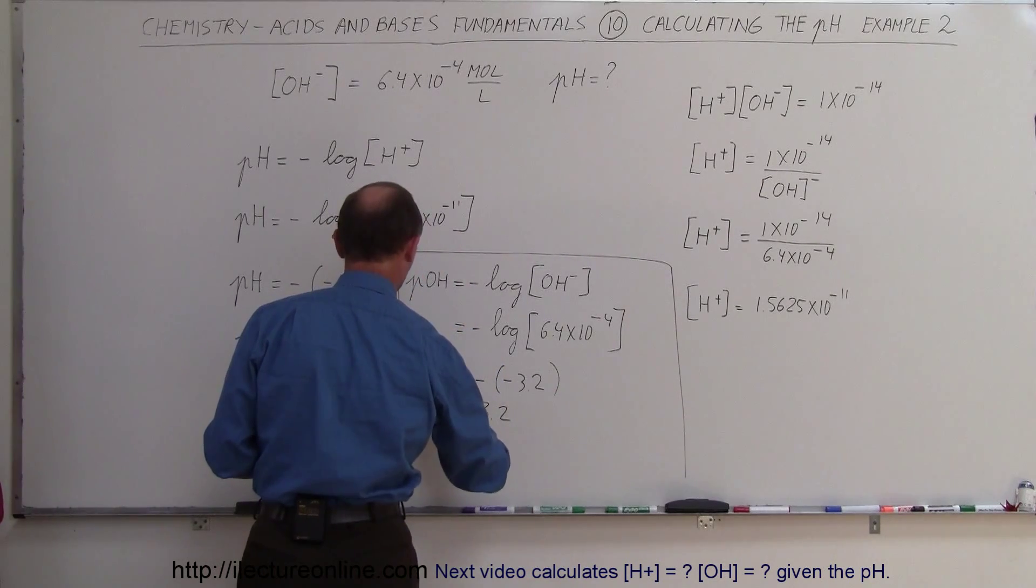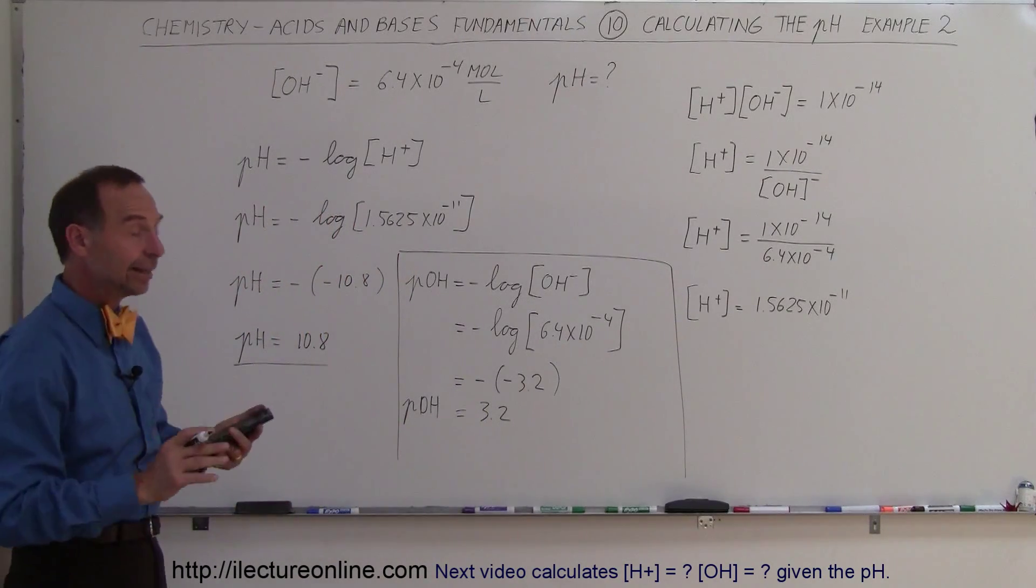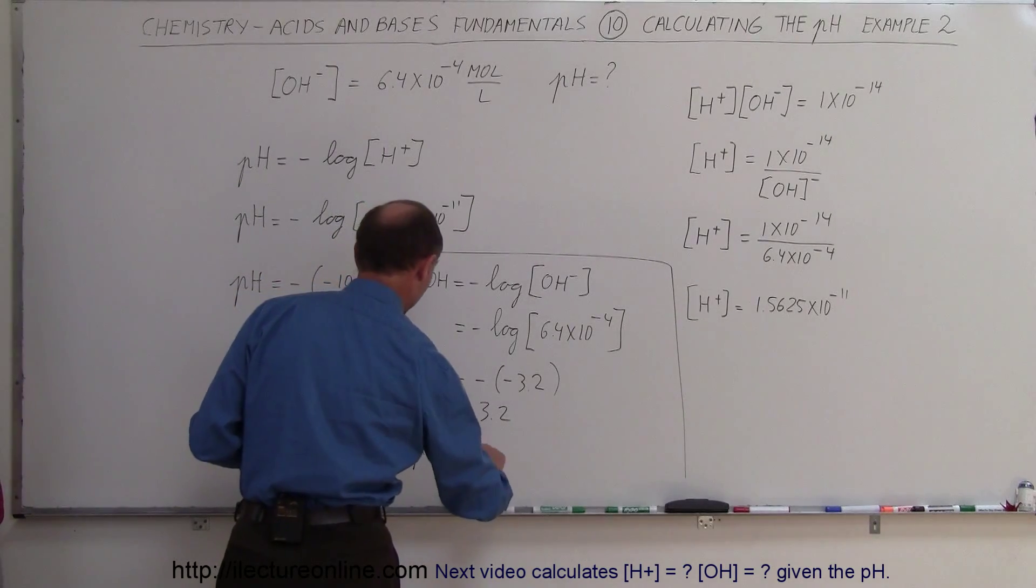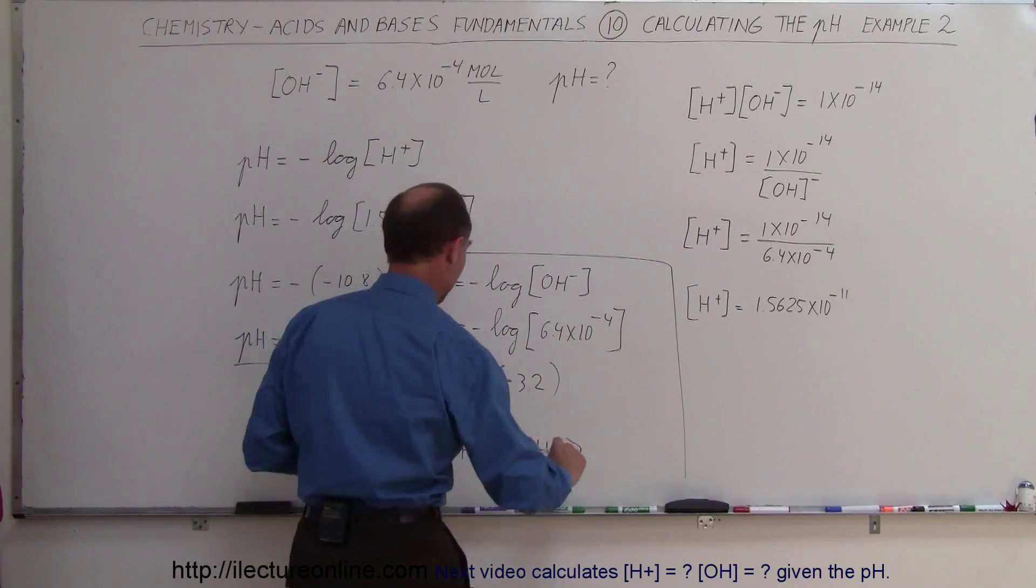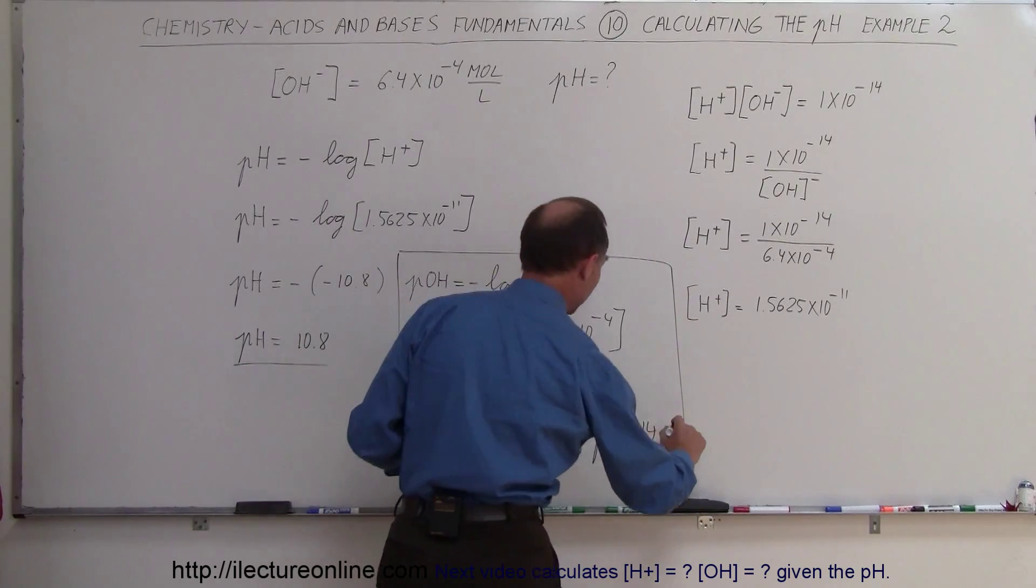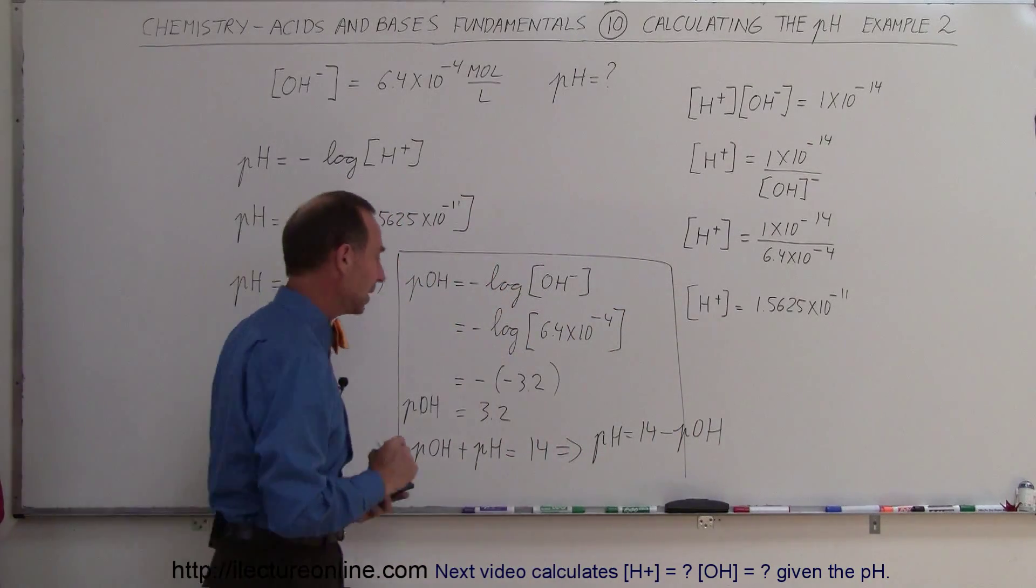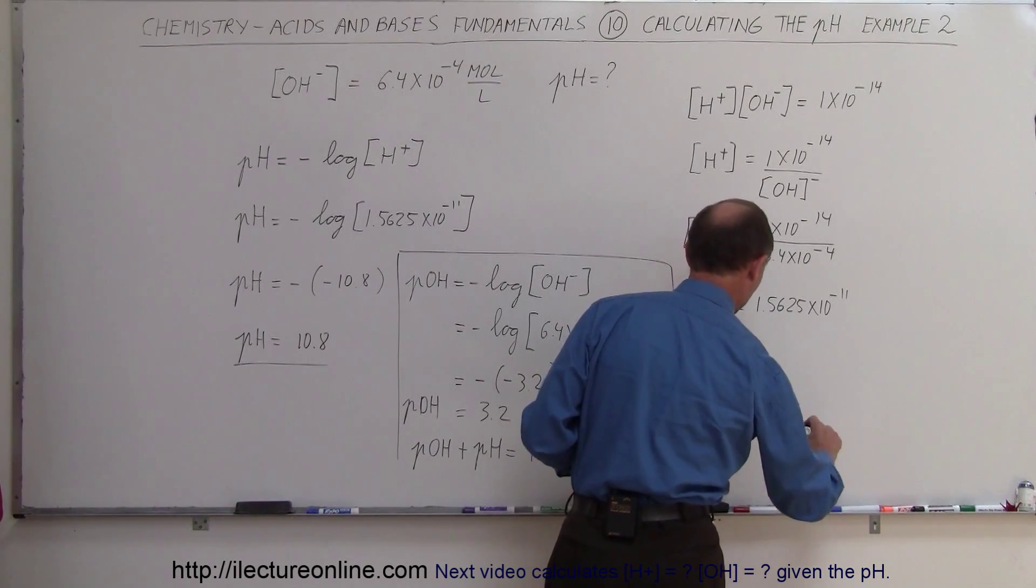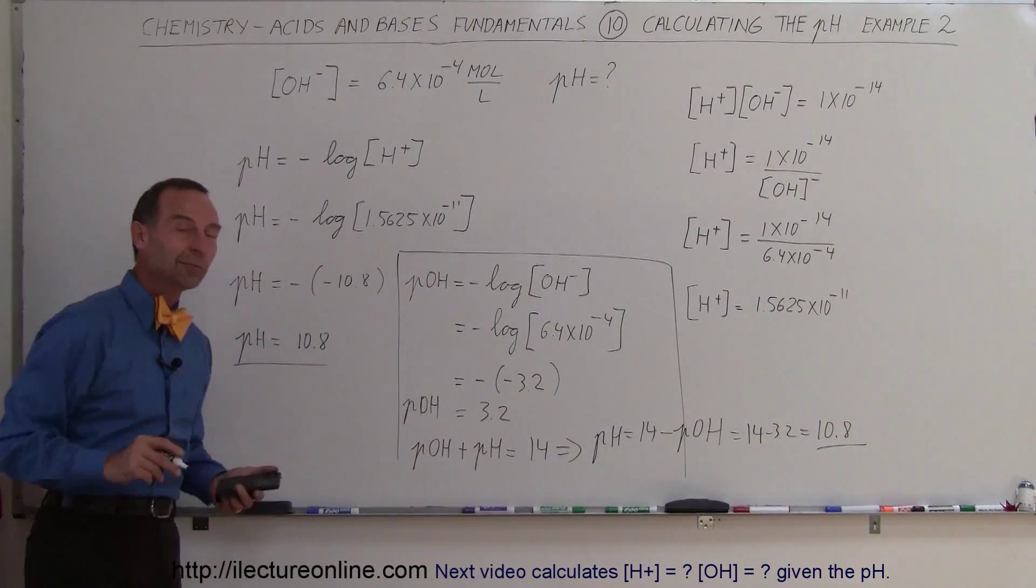So the pOH is 3.2, so that's a measure of the concentration of the hydroxide ion, and then we remember that the pOH plus the pH is equal to 14, which means that the pH is equal to 14 minus the pOH. I'm running a little bit out of my bounds there, but that's fine. And since the pOH was calculated to be 3.2, so 14 minus 3.2 is equal to 10.8, and we get the exact same result as we did before.